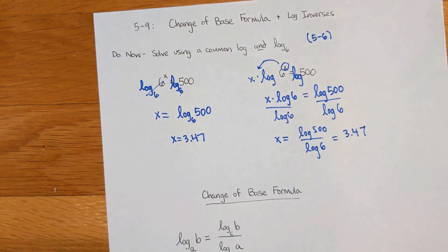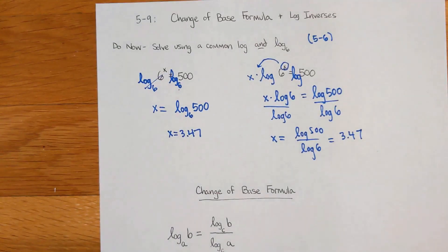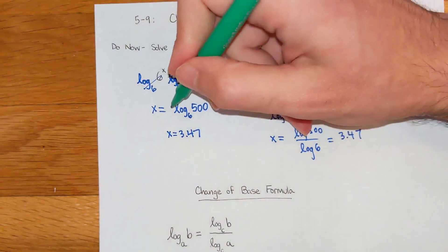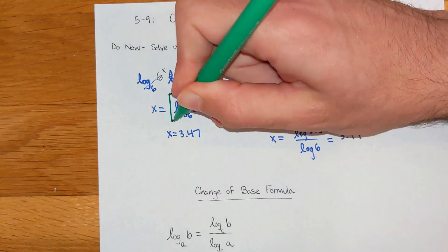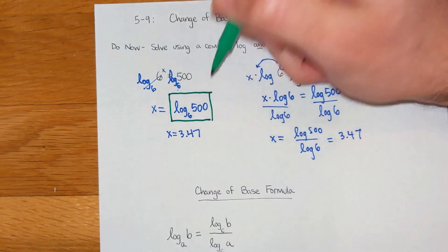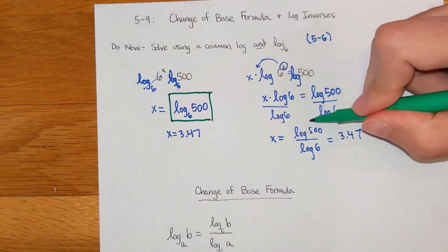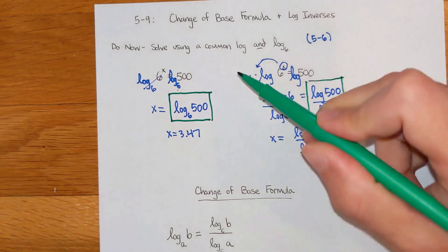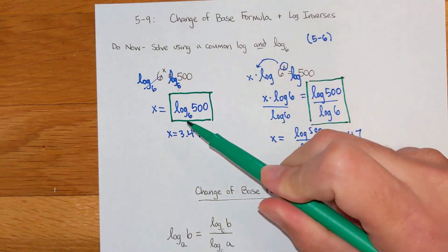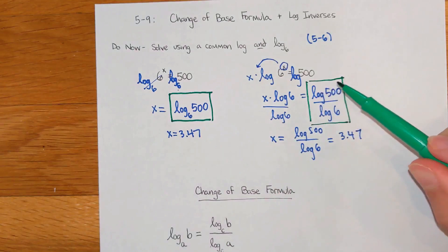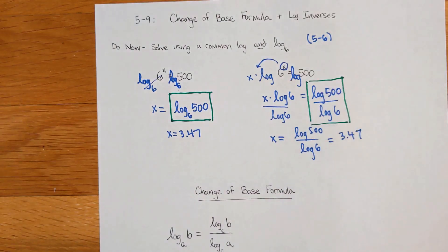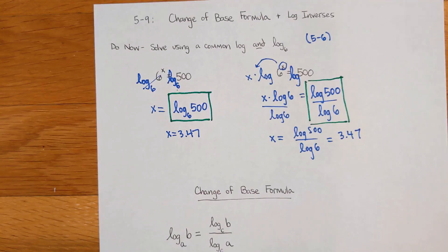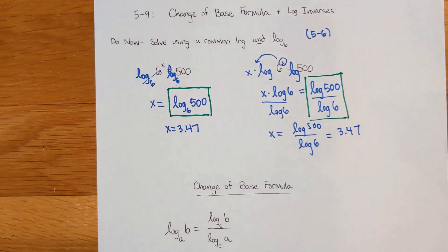Now, we did this before, but what I want to point out right here, in solving this problem two ways, we have two quantities that I'm going to box in right here. This guy, log base 6 of 500, and this guy right here with my fraction. If I can solve the problem either way and they give me the same decimal, that must mean that this thing in the box is equal to this thing in the box over here. And this is basically illustrating a really important formula that you can use with logs called the change of base formula.